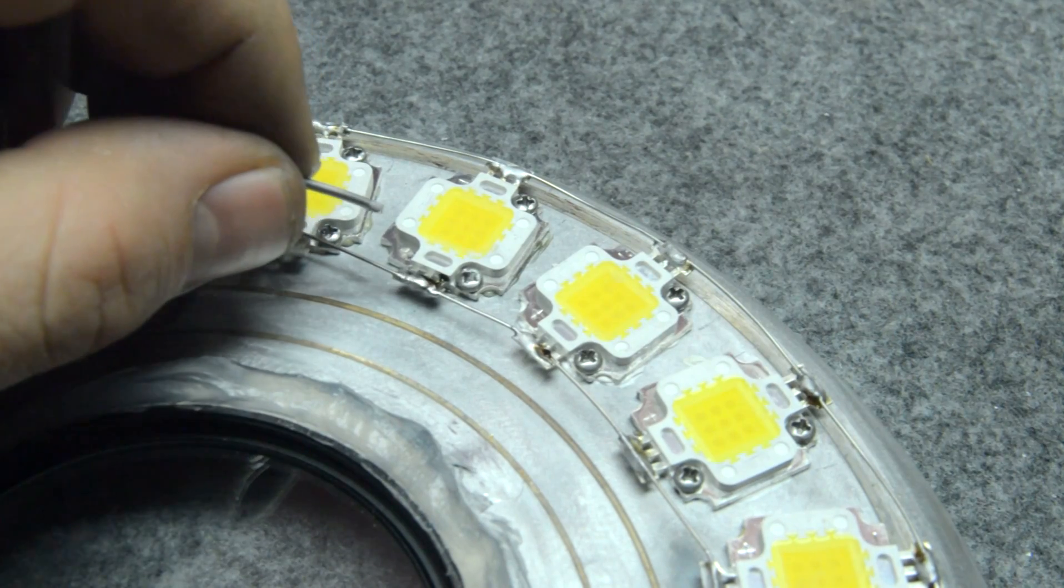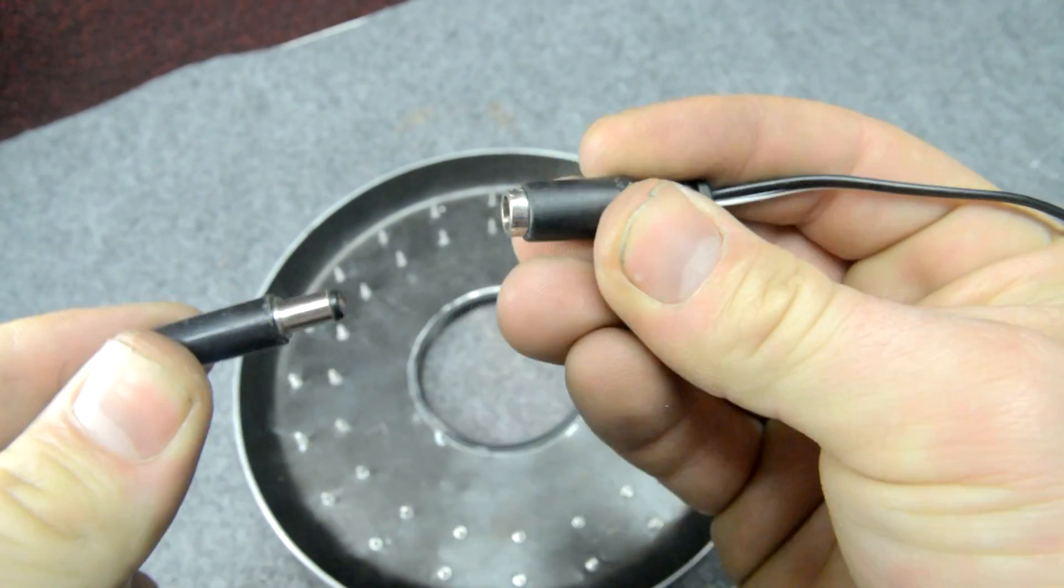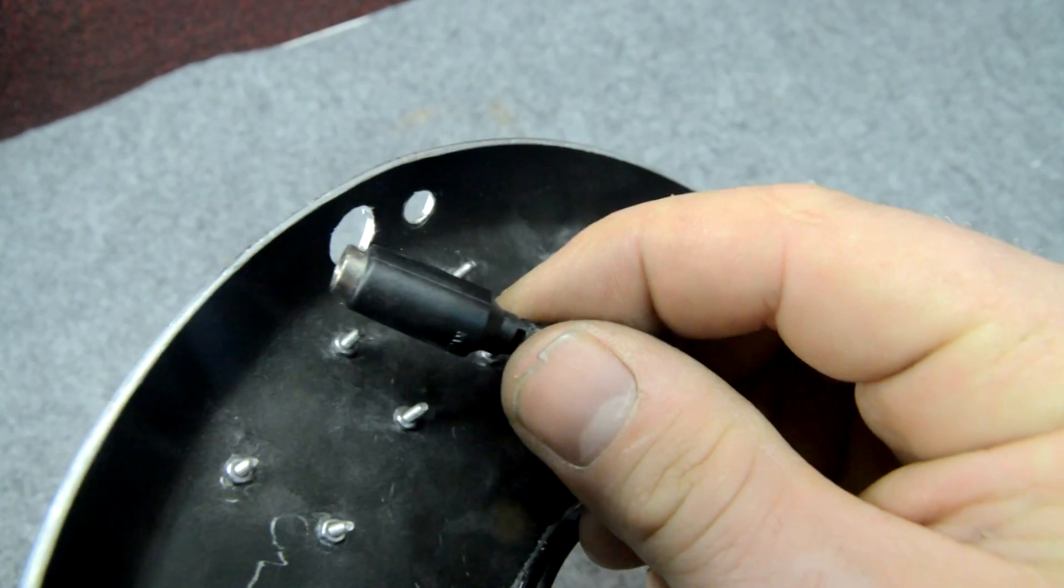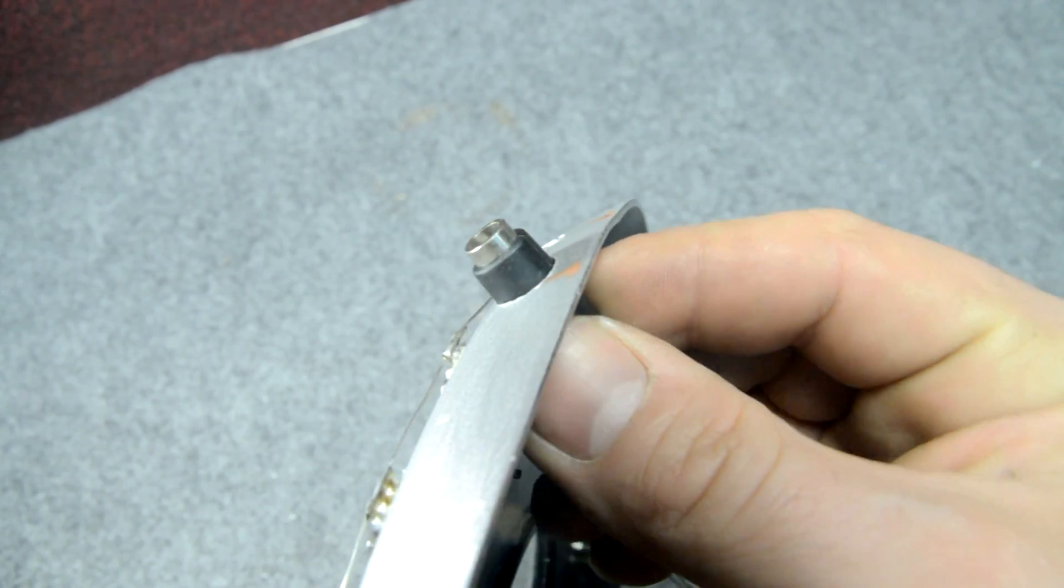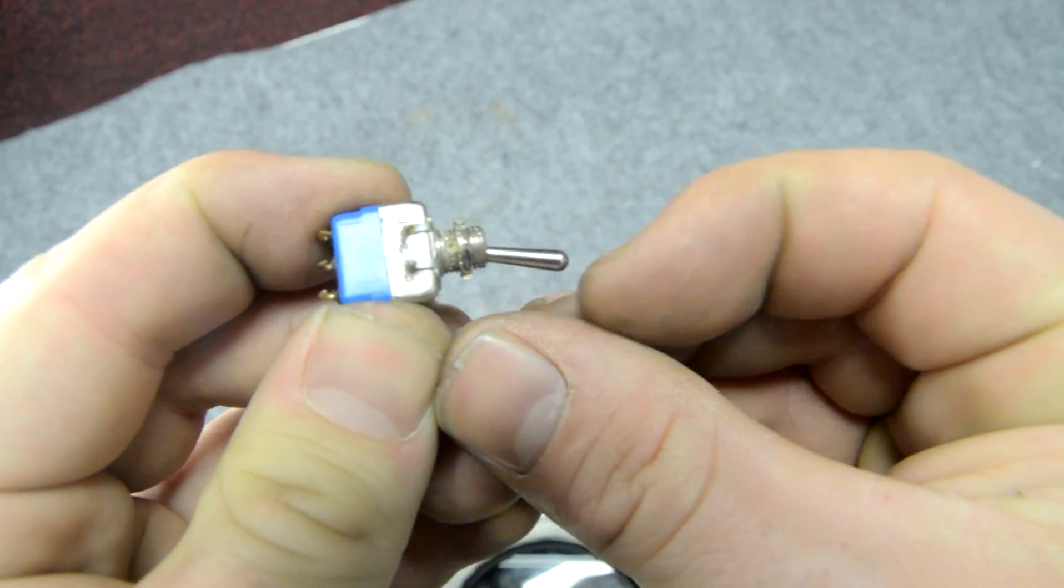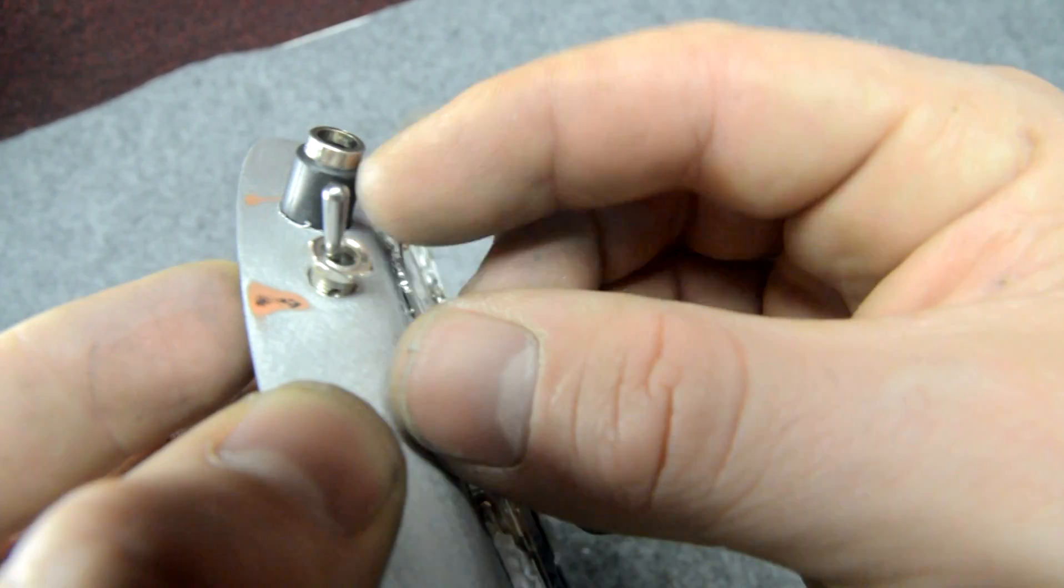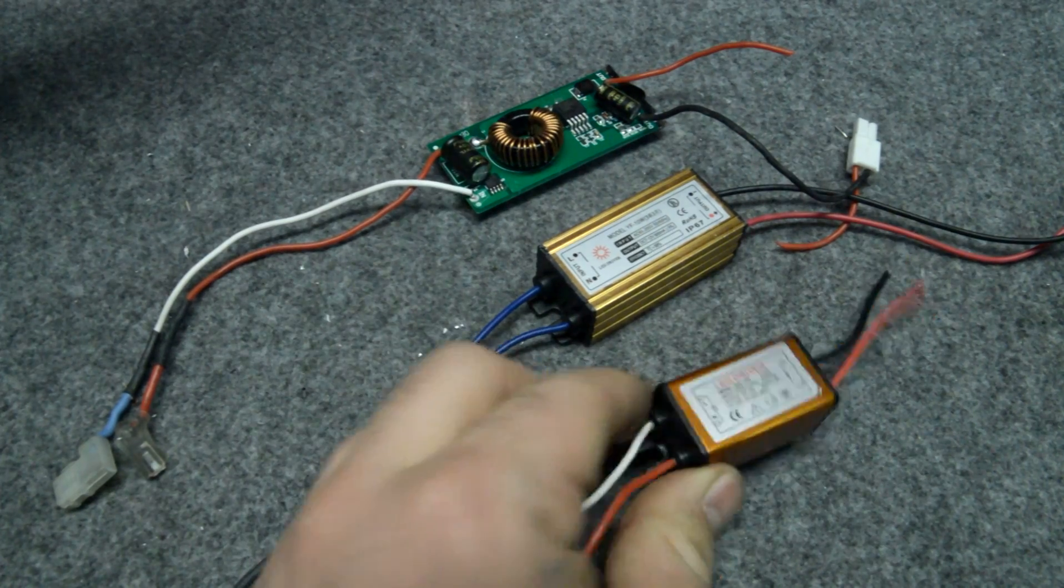Let's take a jack - this is a power jack - and I just have to put it inside the hole where the handle was mounted. On the side I can place this little switch and I secure it on the front with its nut.